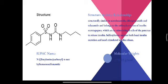IUPAC name: Butyl-Amino-Carbonyl-4-Methylbenzene-Sulfonamide. Structural Activity Relationships: Tolbutamide is structurally similar to Acetohexamide, Chlorpropamide, and Tolazamide and belongs to the sulfonylurea class of insulin secretagogues, which act by stimulating beta cells of the pancreas to release insulin. Sulfonylureas increase both basal insulin secretion and meal-stimulated insulin release. Molecular weight of Tolbutamide is 270.35 g/mol.